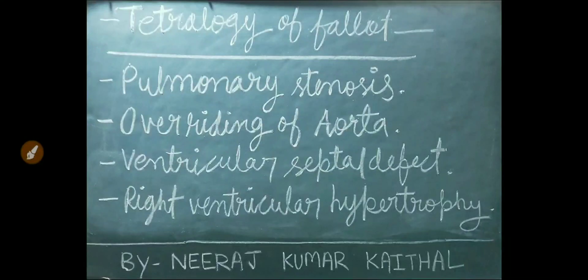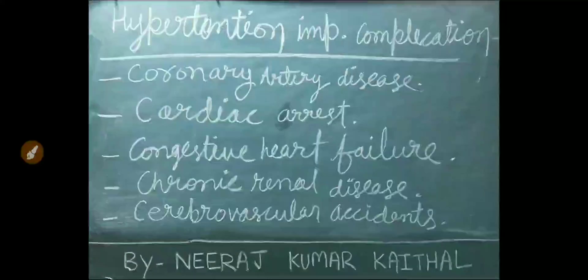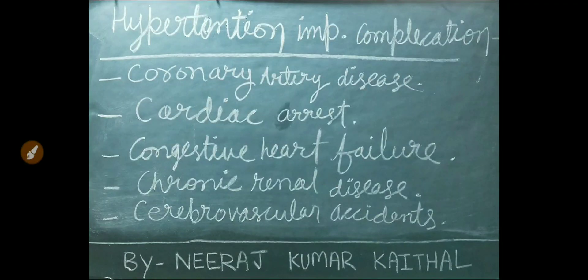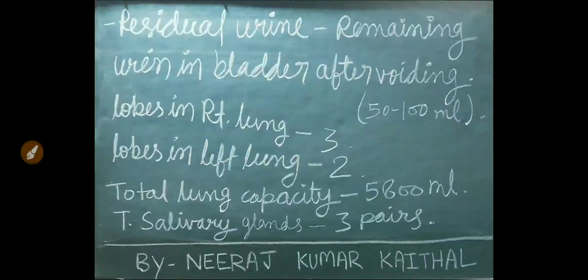In tetralogy of Fallot, these four conditions are present: pulmonary stenosis, overriding of aorta, ventricular septal defect, and right ventricular hypertrophy. A few important complications related with hypertension are: coronary artery disease, cardiac arrest, congestive heart failure, chronic renal diseases, and cerebrovascular accident.